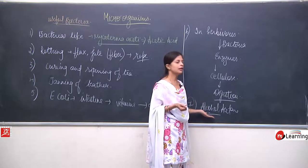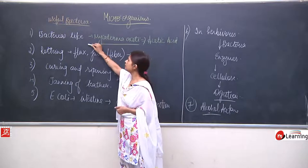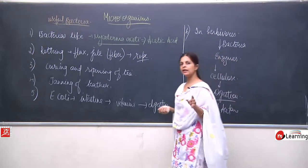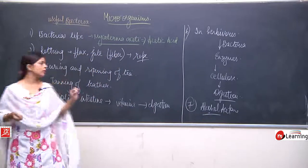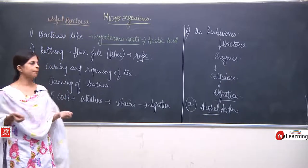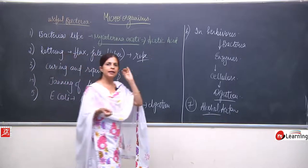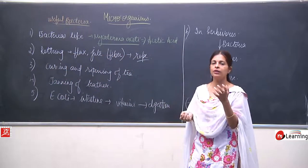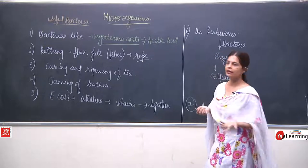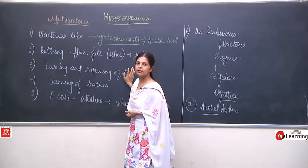Certain bacteria like Mycoderma aceti are responsible for making acetic acid. Bacteria are also used in retting of flax and jute — that means the fibers — from which rope is made. They are also used in the curing and ripening of tea. The characteristic feature of the tea — certain aromas and flavors — is due to the working of the bacteria. So bacteria are used in the tea industry also.